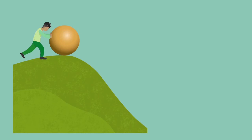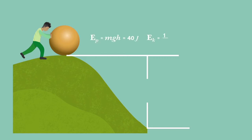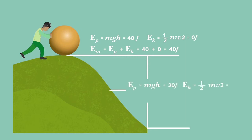When we talk about the mechanical energy of an object, we are referring to the sum of its kinetic and gravitational potential energy at that point: EM = EK + EP.